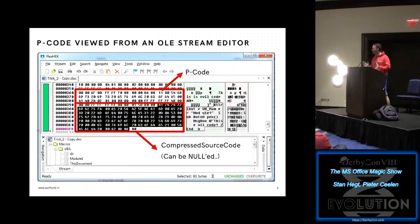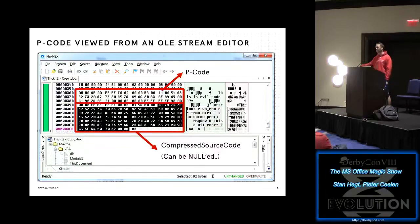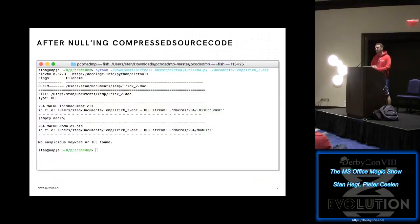To explain it simply: if you look at our module stream, you see the compressed source code on the bottom and the p-code on the top. So what you can do — if you know the exact version of Word or Excel your victim is using — is null out the compressed source code, leave the p-code in there, and then the p-code runs instead of the VBA source code. If you then go to your analyst tool, the macro has completely disappeared.